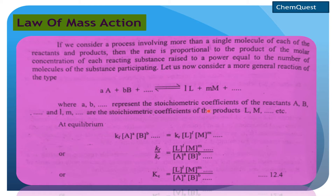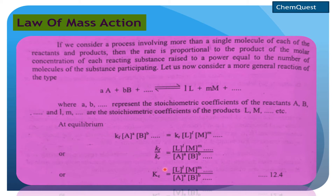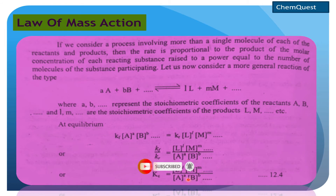Small a اور small b stoichiometric coefficients کو represent کرتے ہیں reactants A اور B کے لیے، اور اسی طرح small l اور small m۔ Equilibrium پر rate of forward reaction equals rate of reverse reaction: kf × [A]^a × [B]^b = kr × [L]^l × [M]^m۔ تو kf/kr is equal to Kc, and this gives us the equilibrium constant in terms of activity of the reacting substances.